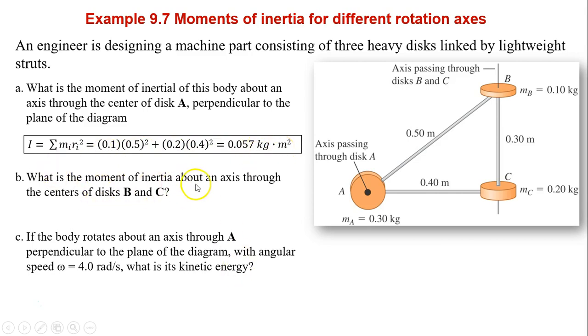Next one, what is the moment of inertia about the axis through the center of B and C? In this case, A would be rotating perpendicular to the screen. Now this would be MA times 0.4 squared plus MB times 0 squared plus MC times 0 squared. So the answer is just 0.048 kilogram-meters squared.